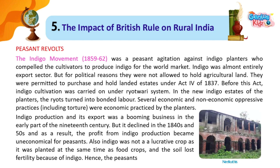Peasant Revolts: The Indigo Movement (1859–62) was a peasant agitation against indigo planters who compelled the cultivators to produce indigo for the world market. Indigo was almost entirely an export sector. But for political reasons, planters were not allowed to hold agricultural land. They were permitted to purchase and hold landed estates under Act 4 of 1837. Before this act, indigo cultivation was carried on under the Ryotwari system. In the new indigo estates of the planters, the ryots turned into bonded labour.